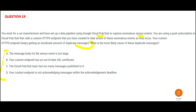Option A says the body of messages is too large — that will not create duplicates. If the body is too large, the message itself will not be processed, but it won't duplicate. Option B says your SSL certificates have expired — if that is the case you would get a different error; your messages will not get duplicated. If your ID card expires and you try to get into the office, you will be kicked out — you would not be allowed in.